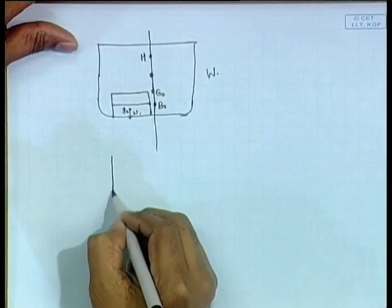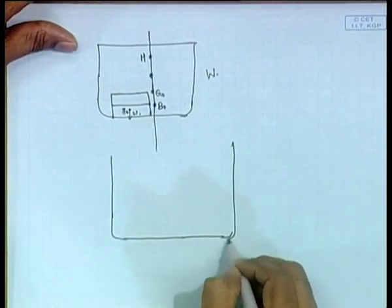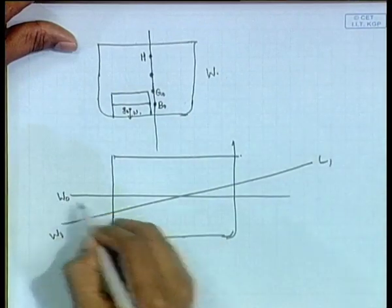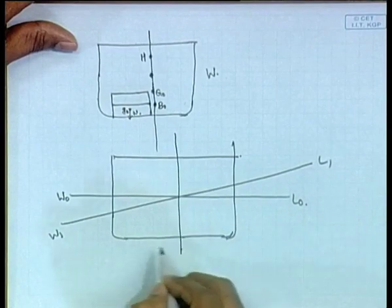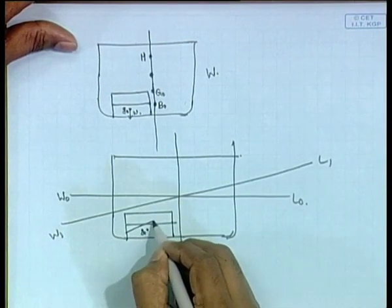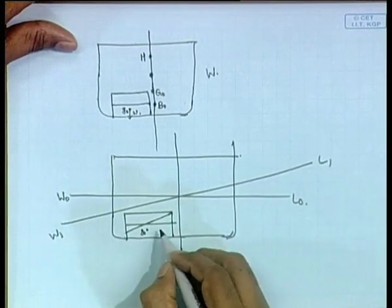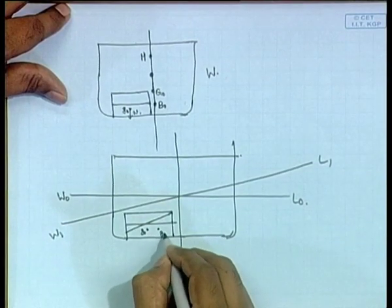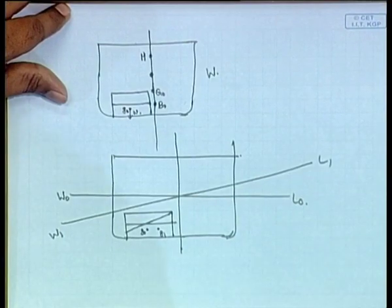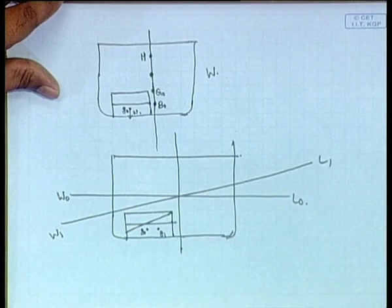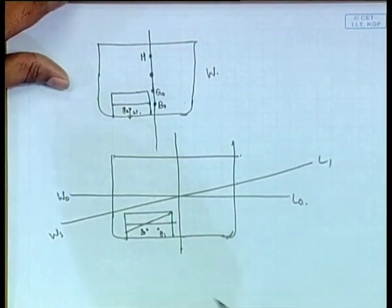Let us draw the inclined waterline W1L1 and this is W0L0. Initially the tank has its G0, and now because of that inclination the water surface is tilted. Because of this, you see that more water is on the right side, so G of that water body will shift to the right — this will be G1. This is just the G of that water body; small g always represents that small water mass alone. This has become similar to that problem we did of shifting of mass — this small weight w is actually shifted from G0 to G1.